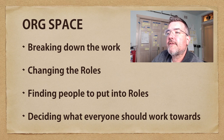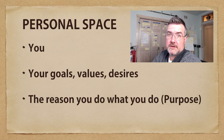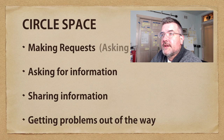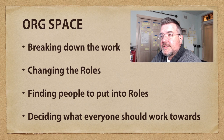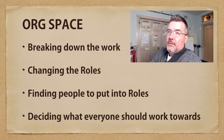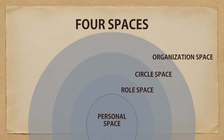Org space is also about deciding what everyone should work towards, which goes back to purpose. As an individual in personal space, you have a purpose. The organization has a purpose too — deciding what everyone should work towards means determining the organization's purpose. There's also purpose at the level of circle and role. So to summarize: personal space is you; role space is you working in a role; circle space is you working with others; and organization space is you working on behalf of the whole organization's structure.